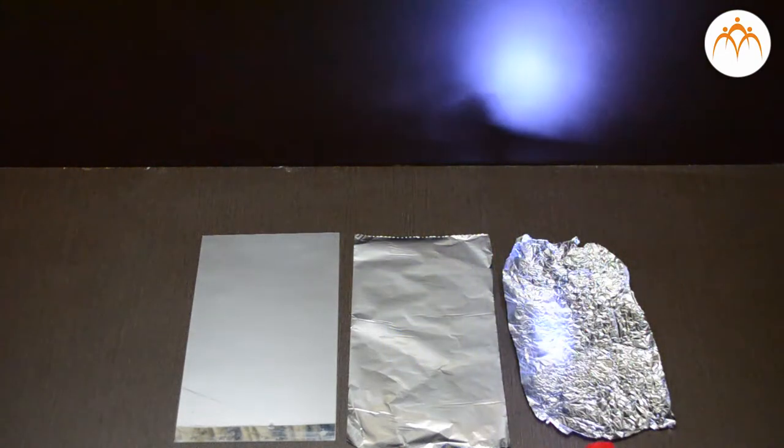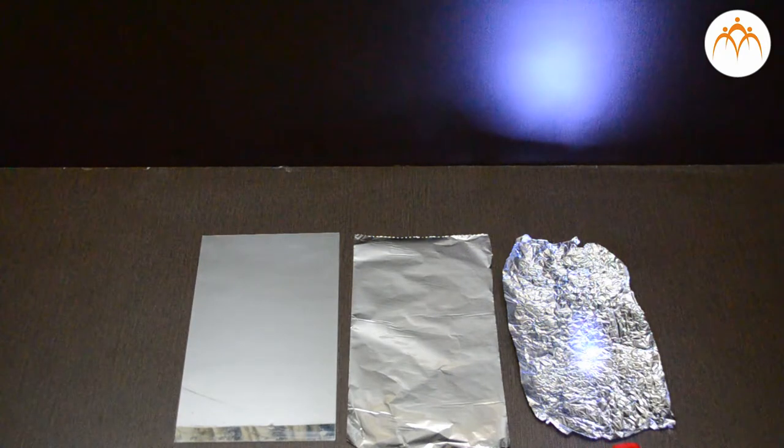Upon crumbling the foil, there are many surfaces which reflect light in all directions. This is diffuse reflection.